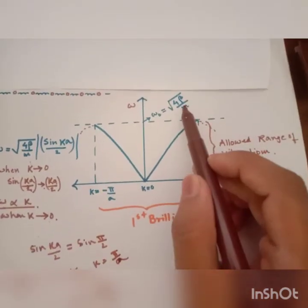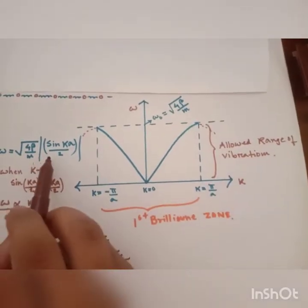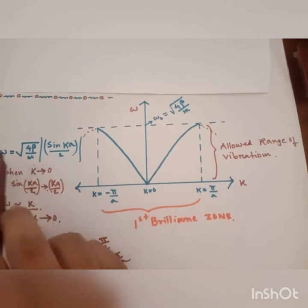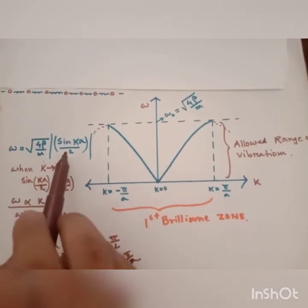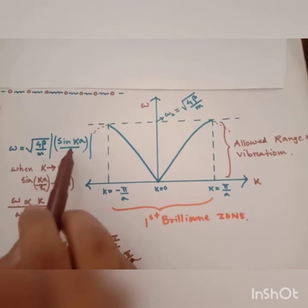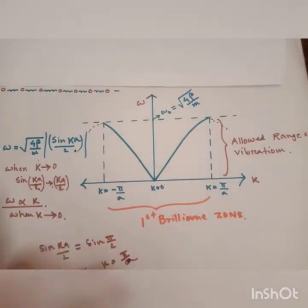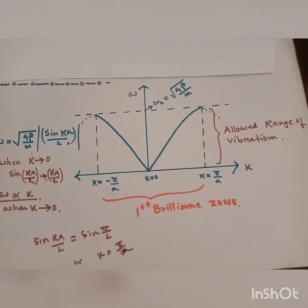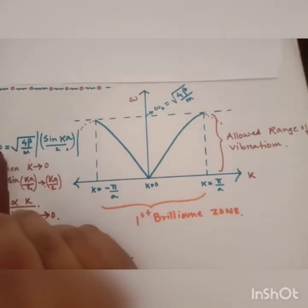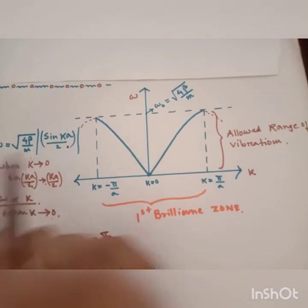Now what is the value of omega maximum? If we put sin ka/2 equal to 1, that is when sin ka/2 equals 90 degrees, then we have omega equal to root of 4β/m.